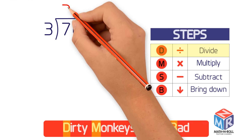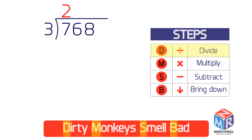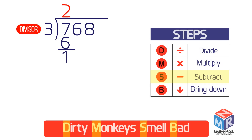Write 2 directly above the 7. Now multiply 3 by 2 to get 6. Place the product directly below the 7 and draw a line beneath it. Subtract 6 from 7 to get 1. After you subtract, the result should be less than the divisor. The divisor is 3, and 3 is greater than 1, so it's okay. Then bring down the next number, 6, to make the new number 16.